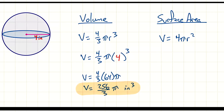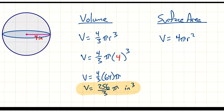For surface area, we're going to do pretty much the same thing. I'm going to set this up: surface area equals four pi r squared — plug in four again — and let's see if you can finish this one. Tell me what the final answer is going to be.